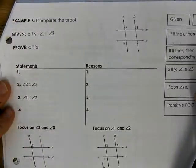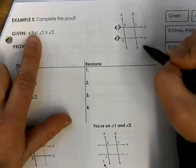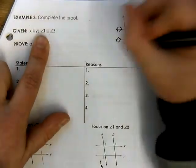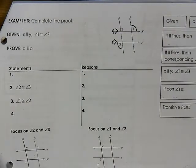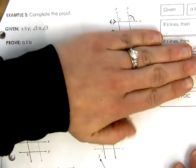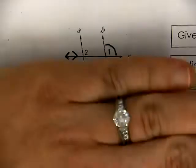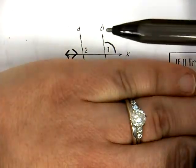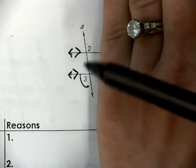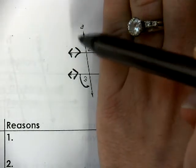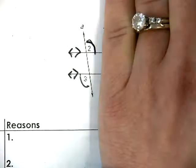For example number three, we are given that X and Y are parallel — so let's mark that up. X and Y are parallel to each other. I'm also told that angle one is congruent to angle three. Now note: angle one and angle three are not along the same transversal, so we cannot say anything about their direct relationship. In order to really analyze a relationship, those angles need to be along the same transversal. So maybe I can say angle one and angle two are congruent, and angle three and angle two are congruent — because I have parallel lines, and if I have parallel lines, then alternate exterior angles are congruent.